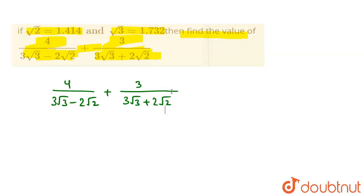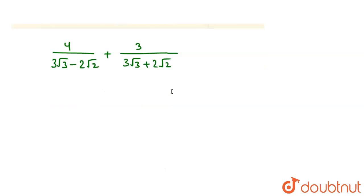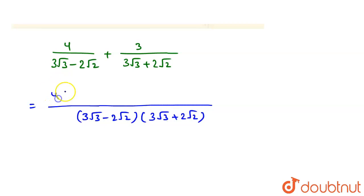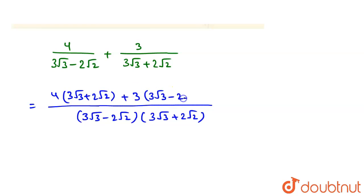We have to find the value of this. In the next step we take LCM. The LCM is (3√3 − 2√2)(3√3 + 2√2). In the numerator we write 4×(3√3 + 2√2) + 3×(3√3 − 2√2).